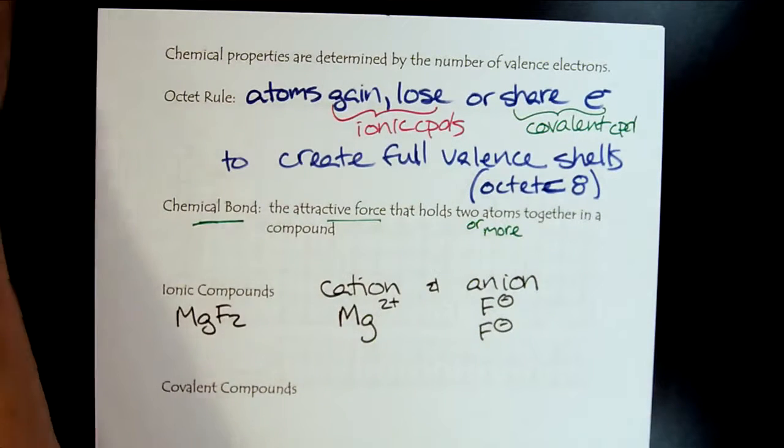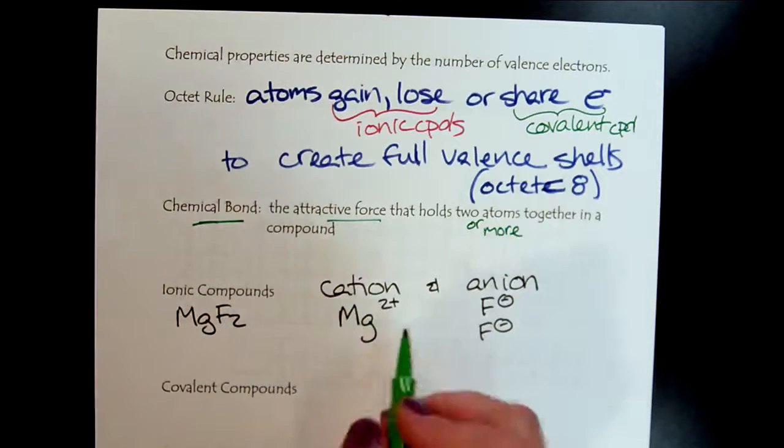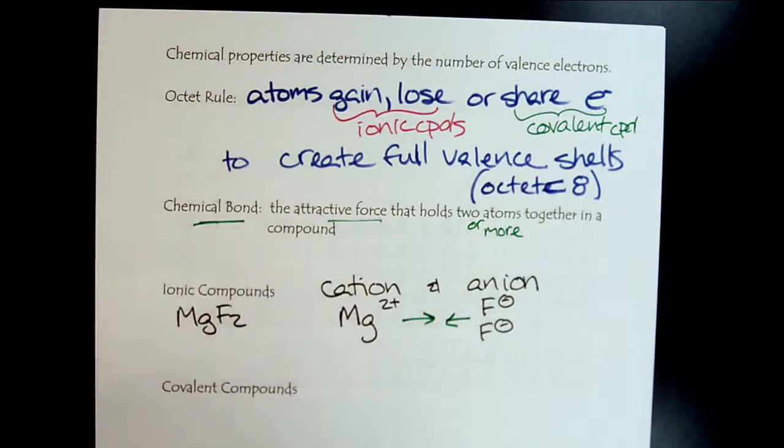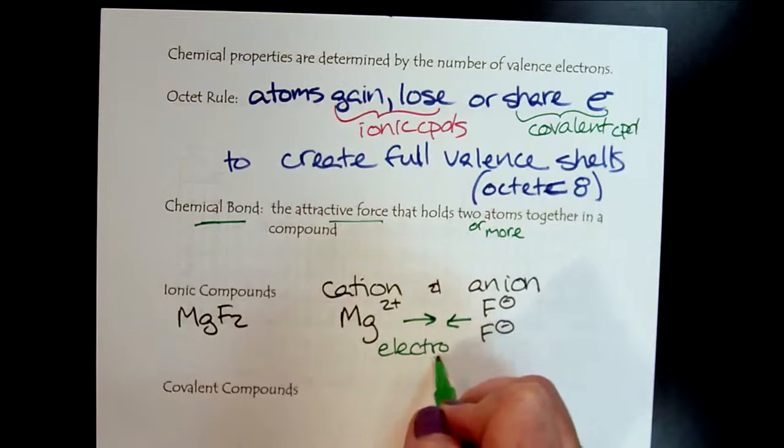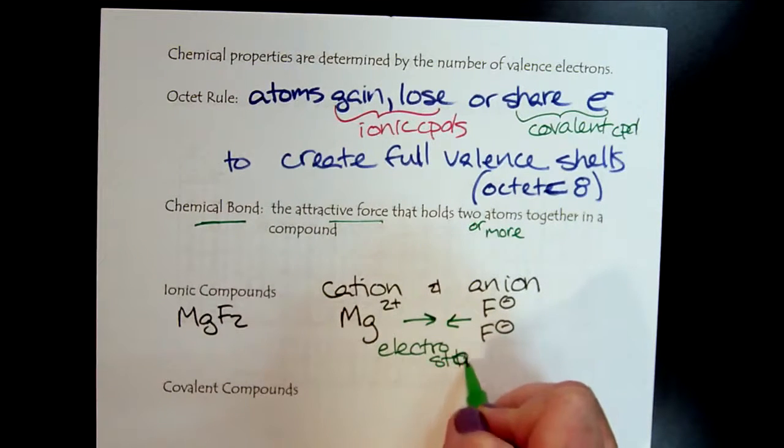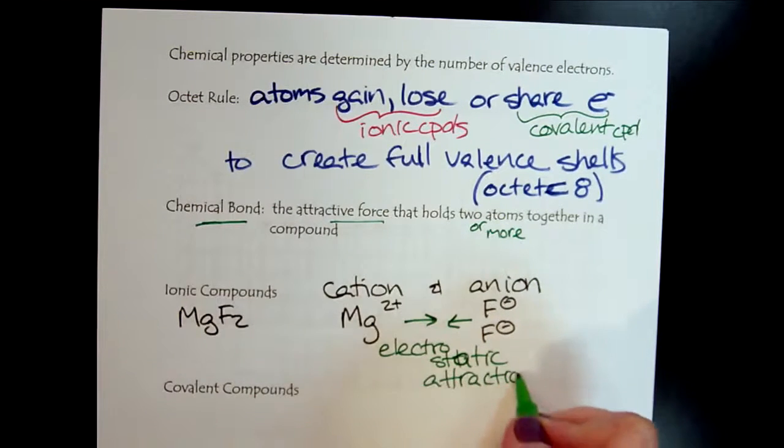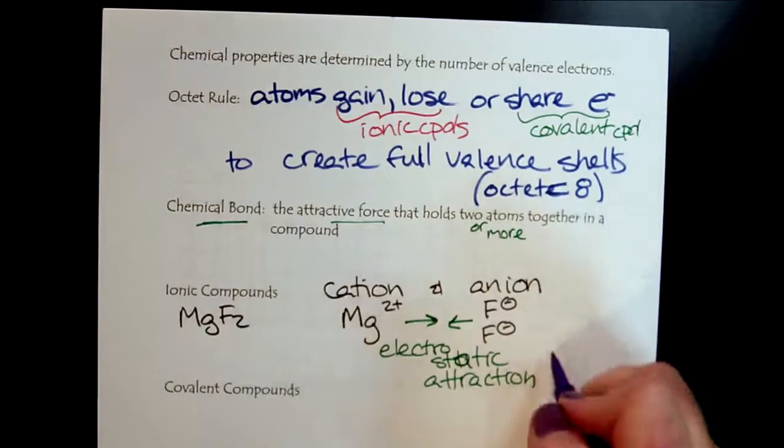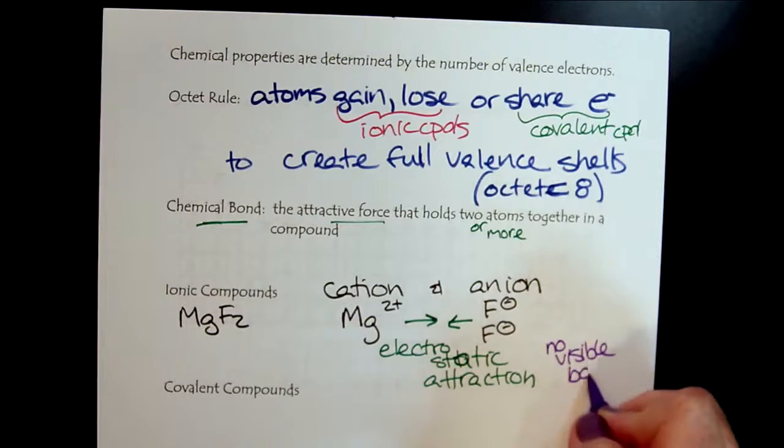And then this is the schematic of an ionic compound. I think they're a little trickier to visualize because they're like little magnetic balls. They're attracted together. There's this electrostatic attraction. There's no visible bond to see.